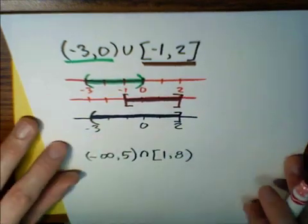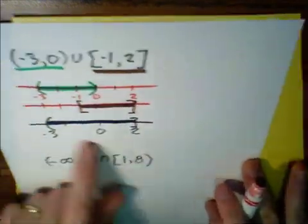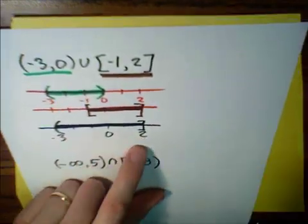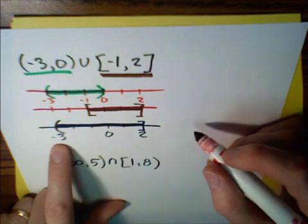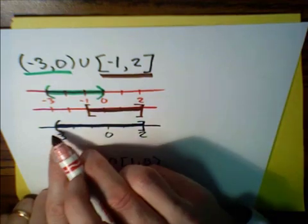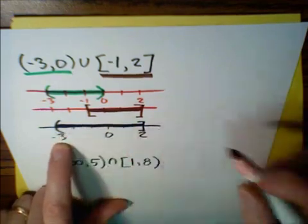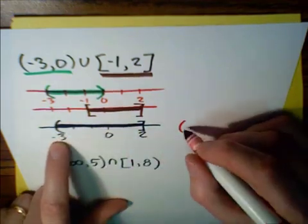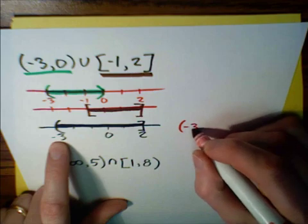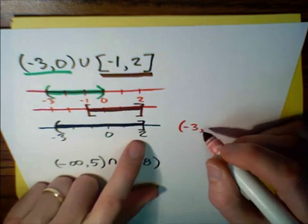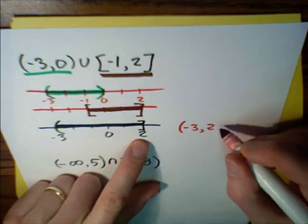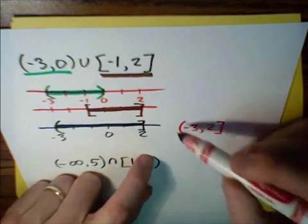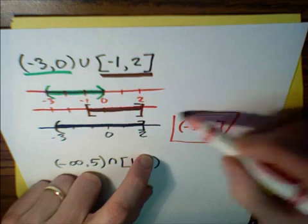To write the answer in interval notation, we read left to right. We start with a parentheses, negative three, comma, two, bracket. That's our final answer: (-3, 2].